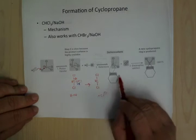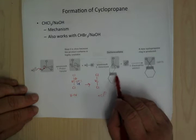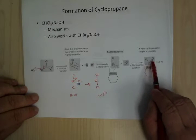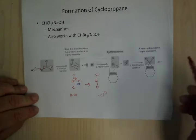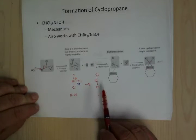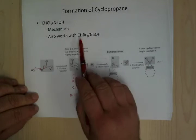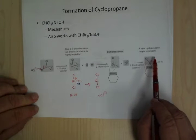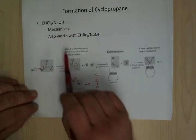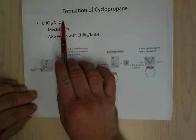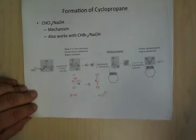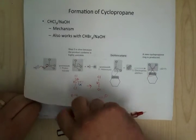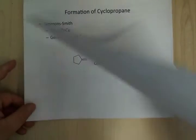Now you can do the carbene reaction with the double bond to make your cyclopropane. The only problem is that instead of hydrogens, you have chlorines on the ring, which can be good or bad depending on what you want. It also works with bromoform — CHBr3 — and you just end up with bromines there instead. This is why you can't run chloroform reactions in base, because you can make these carbenes which might be reactive with your molecule. Switching to dichloromethane avoids that problem.